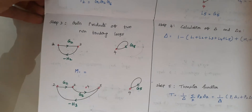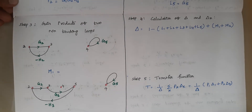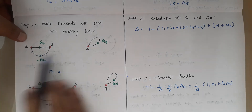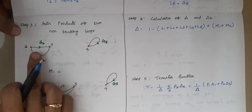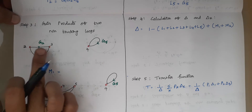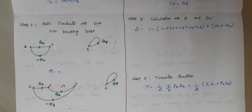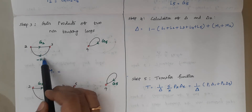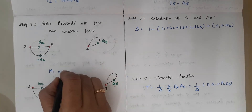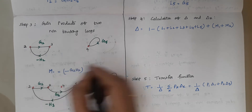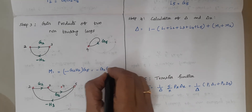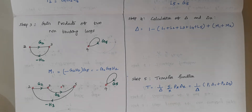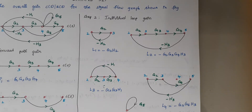The first non-touching pair consists of loop 1 (nodes 2 and 3) and loop 5 (node 4). Their gain product is (−G2H2) × G5 = −G2G5H2. This is the gain product M1 for the first pair of non-touching loops.